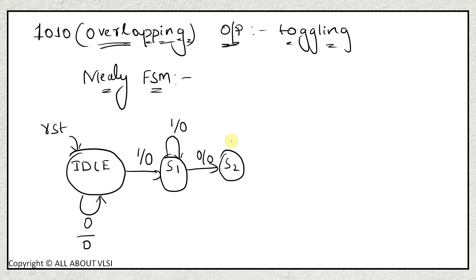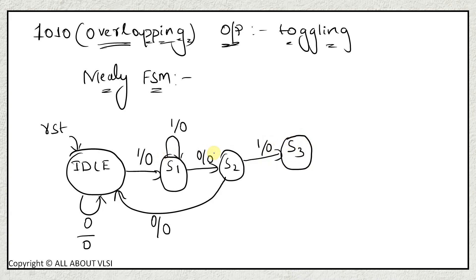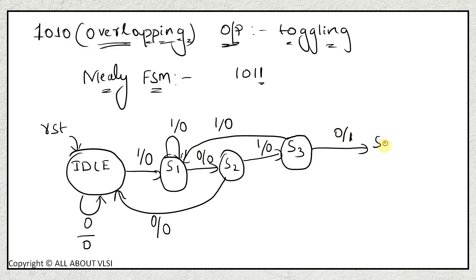From S2, if you get one more 0, you go to idle because the sequence is not building. If you provide 1, you go to S3 with output 0. With sequence 1-0-1, if you get one more 1, the sequence isn't building but you can reuse the last 1, so you go to S1 with output 0. With 1-0-1-0, if you get one more 0, we need the output to toggle, so we go to S4 where output becomes 1.